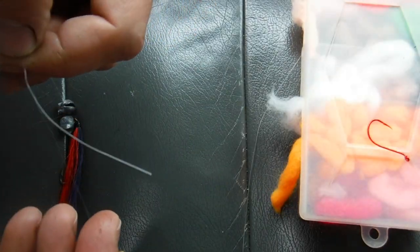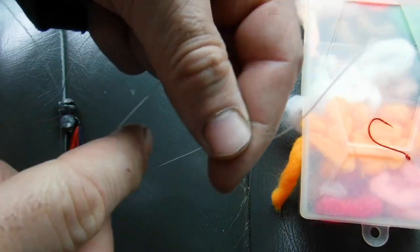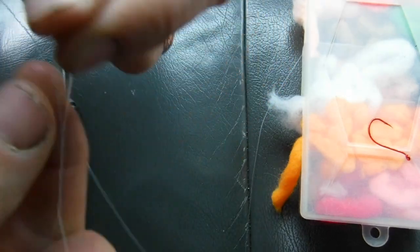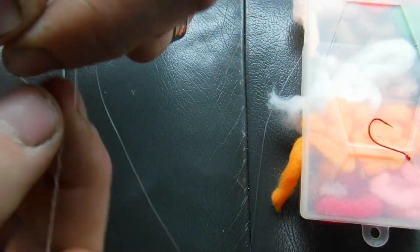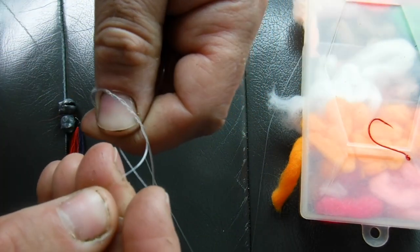Now that I've cut that, I'm going to show you what I do here. I'm going to take that body of that line, poke it through. So now I have a tag end hanging up here. I'm going to spin it one, two, three, four, five times. After I've spun it five times, I'm going to take that tag end and poke it through that loop that I just made where my finger was.